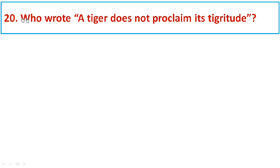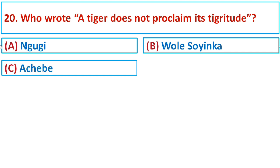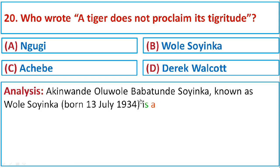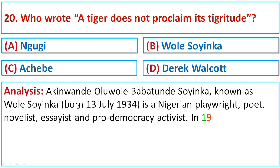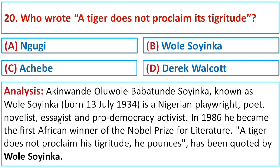Question number twenty: Who wrote 'A tiger does not proclaim its tigritude'? Option A: Ngugi, Option B: Wole Soyinka, Option C: J.P. Clark (HB), or Option D: Derek Walcott. Wole Soyinka — full name Akinwande Oluwole Babatunde Soyinka, born 13th July 1934 — is a Nigerian playwright, poet, novelist, essayist, and pro-democracy activist who in 1986 became the first African winner of the Nobel Prize for Literature. 'A tiger does not proclaim his tigritude, he pounces' has been quoted by Wole Soyinka. The correct option is B: Wole Soyinka.